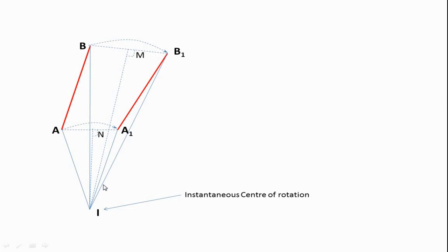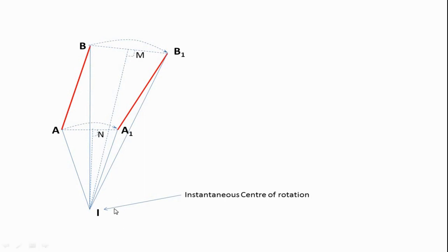Regarding this instantaneous center: if the link changes its position from A1 to A2 and B1 to B2, the center is going to change its position. That is why it is called a temporary center, or also an imaginary or virtual center — because every time, according to the position of the link, the instantaneous center changes its position.